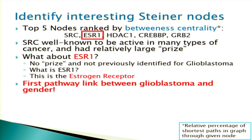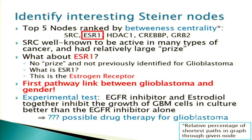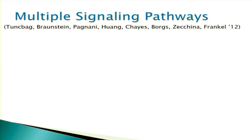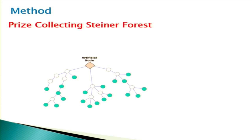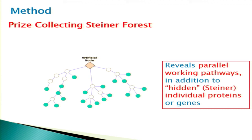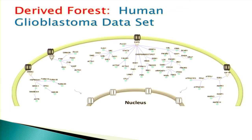The experimental test: putting estradiol (basically estrogen) together with an EGFR inhibitor into culture inhibited the growth of glioblastoma. That's a long way from pumping estrogen into someone's brain given the blood-brain barrier, but it begins to give you a target — maybe a clever nanochemist can deliver it. We then extended to multiple signaling pathways using forests instead of trees, by introducing an artificial node that breaks the tree into many subtrees. We found lots of parallel pathways operating in both yeast and glioblastoma.